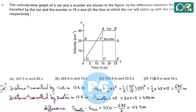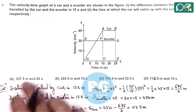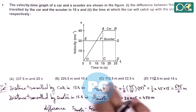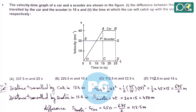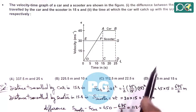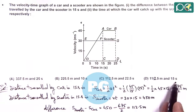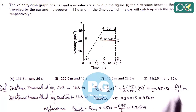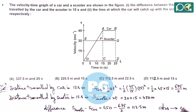Both options C and D show 112.5 meters, so options A and B can be discarded. Looking carefully at C and D, option D can be eliminated without further solving because it states the time when the car catches up the scooter is 15 seconds, which is incorrect — at 15 seconds the distance travelled by the car is less than that of the scooter. So the answer is option C.